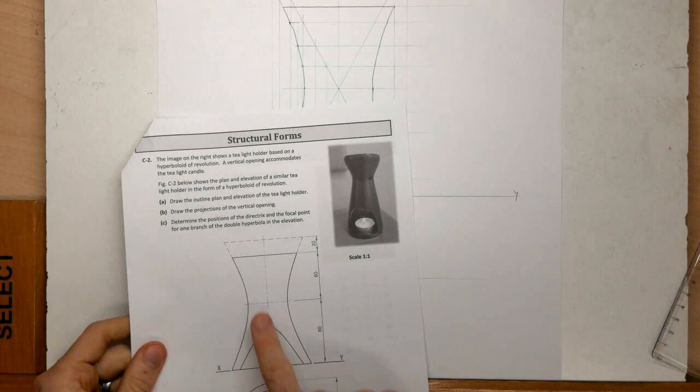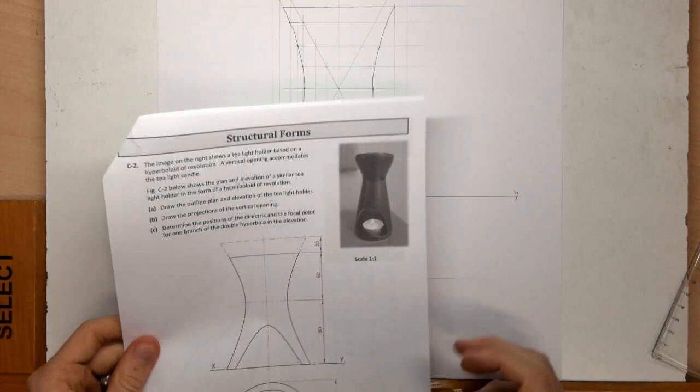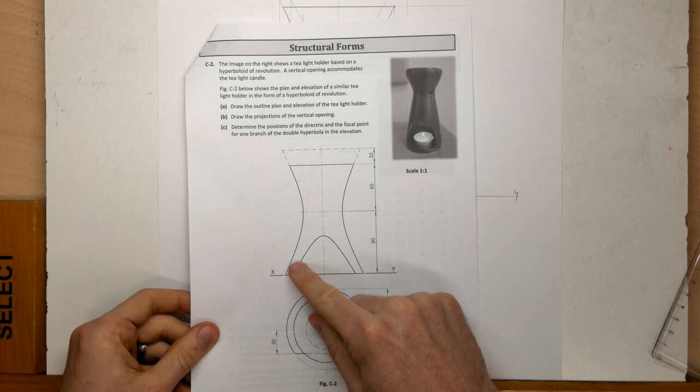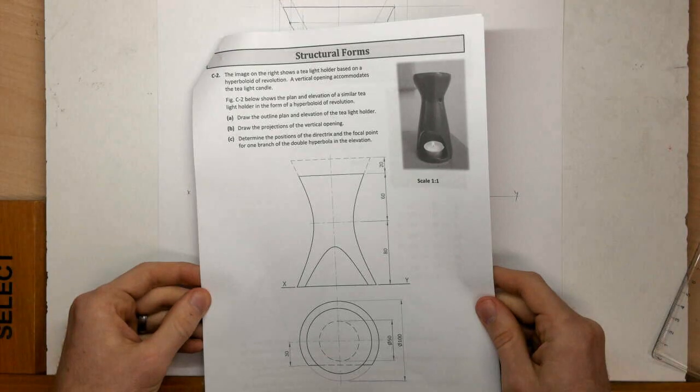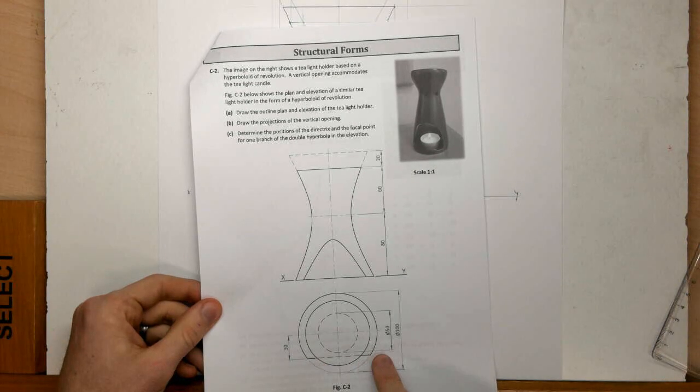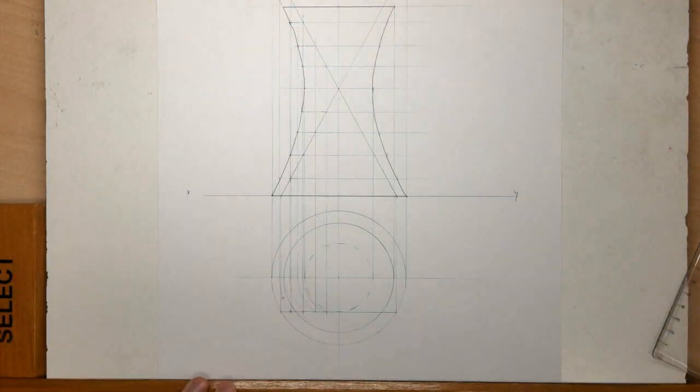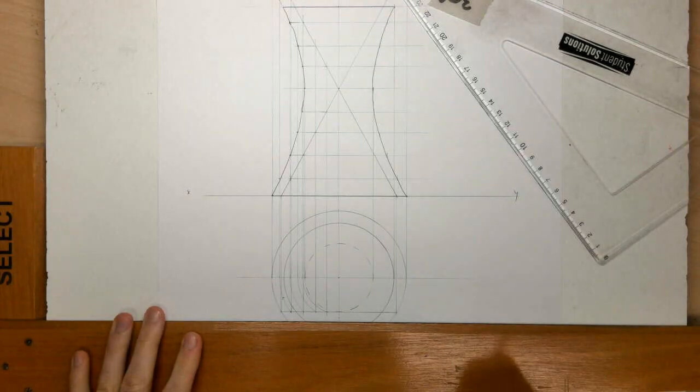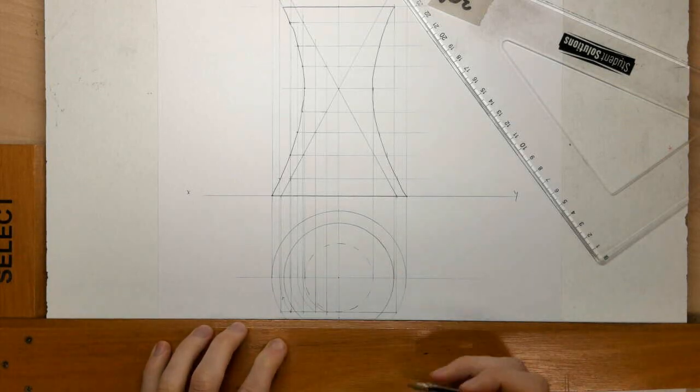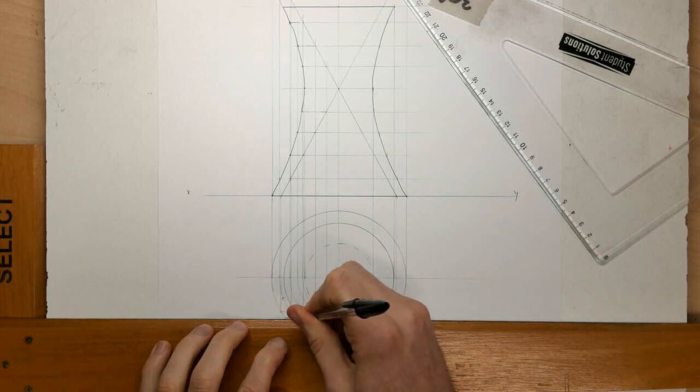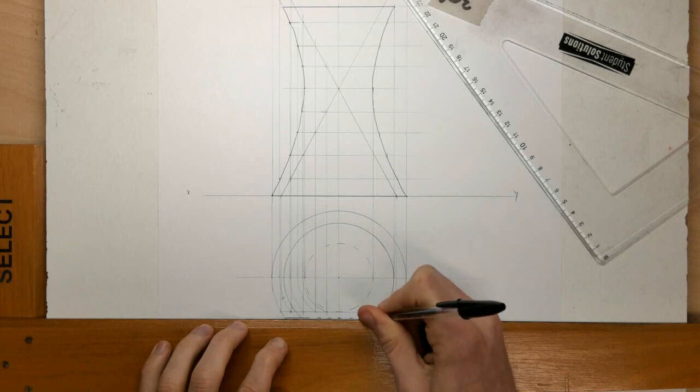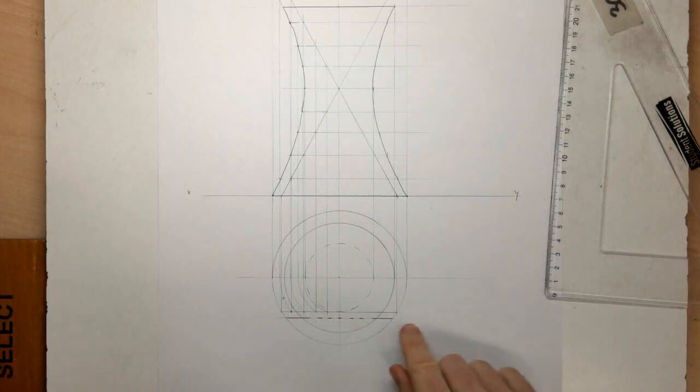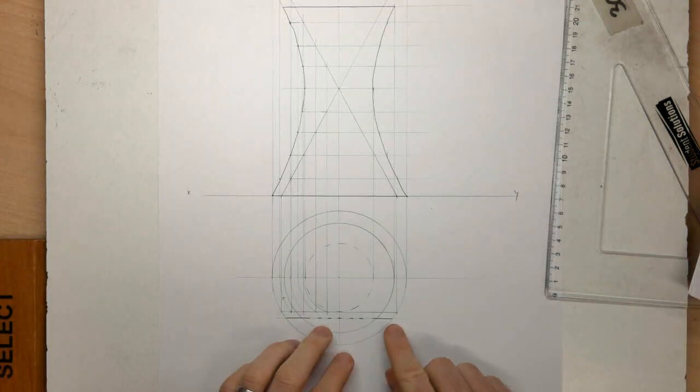Next up they want us to draw the projections of the vertical opening. Okay so the vertical opening, we can see it's 30 down from the center, it'll be a straight line opening which is creating a hyperbola. And so what we're going to do is once we've drawn that, we'll be able to draw the elevation.